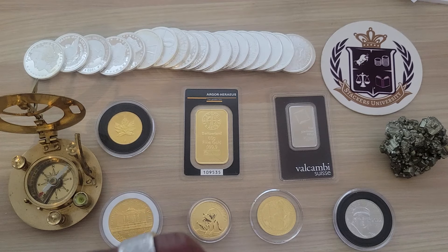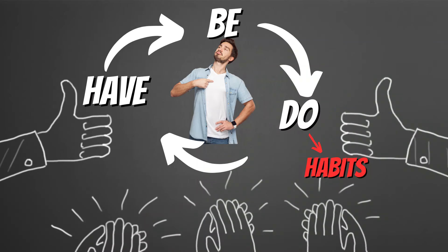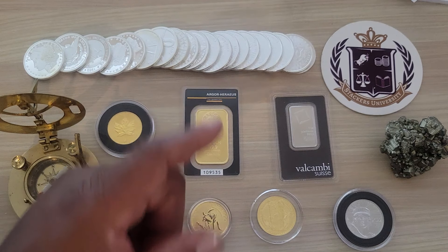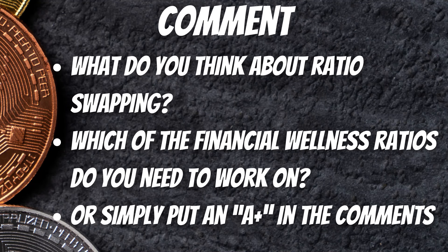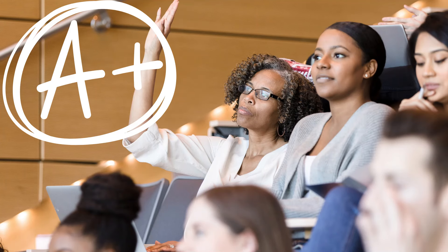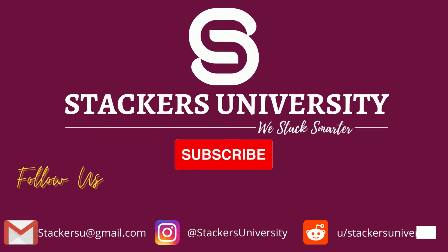I learned and lived the model of be, do, have. I had to be a different person on the inside — how I thought, how I felt, how I believed about money — in order to do what was needed to be done in order to have the life that I wanted to have. And you can do the same. Click on the link if you need help or want to learn more — it's free, and it's about giving back to the community. In the comment section, what do you think about ratio swapping? Which of the financial wellness ratios do you need to work on? Or simply put an A+ in the comments so everyone knows that you always stack smarter and never stop learning.